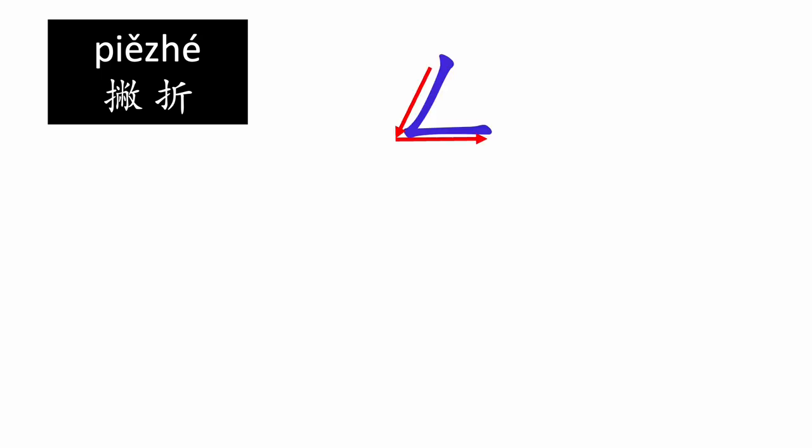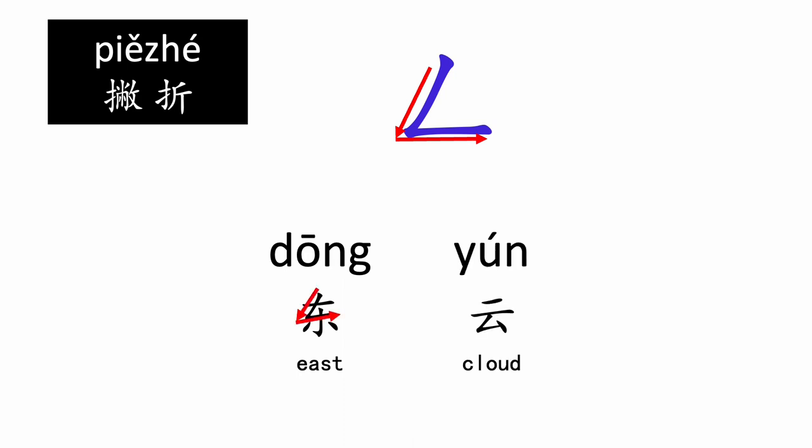Next, we will learn the first stroke: 撇折. Start with the left folding, and then a horizontal line. There are some characters with this stroke, like 东, meaning east, and 云, which means cloud.